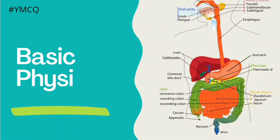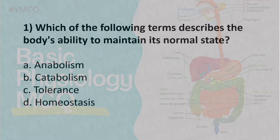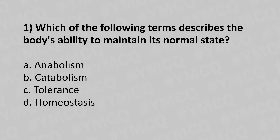Hello, welcome to Basic Physiology. Here we are going to discuss fundamental MCQs of physiology. Let's move to our first question: Which of the following terms describes the body's ability to maintain its normal state? Option A: anabolism. Option B: catabolism. Option C: tolerance. Option D: homeostasis. The answer is Option D: homeostasis.